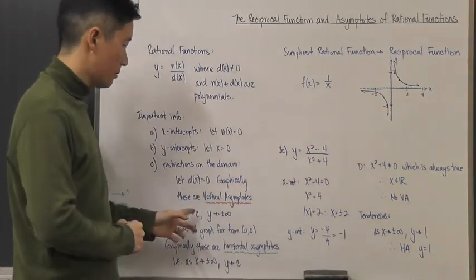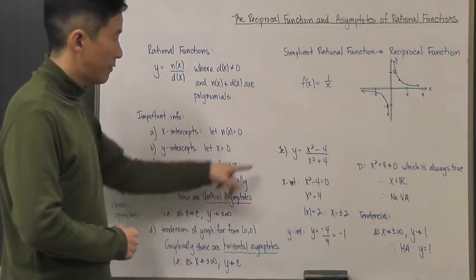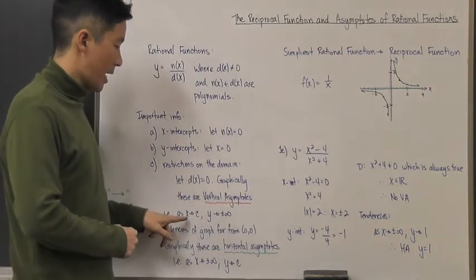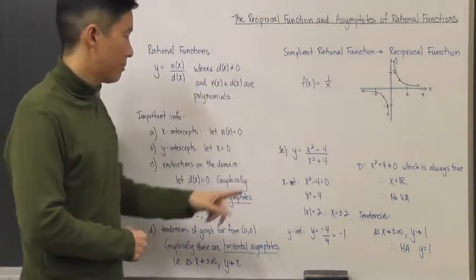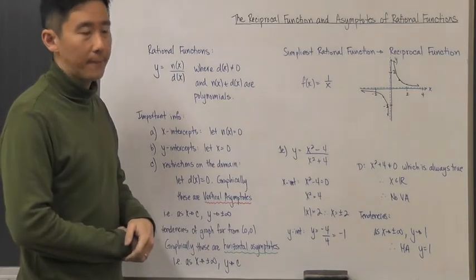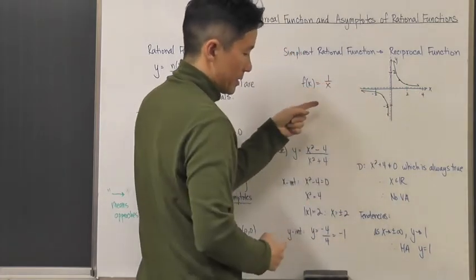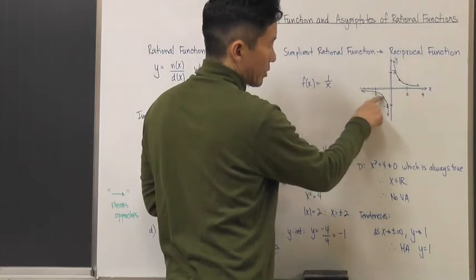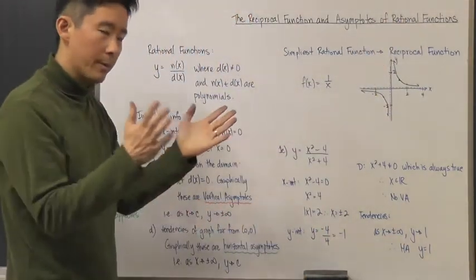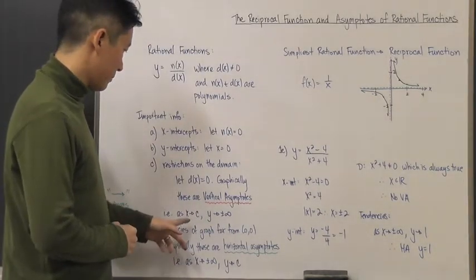To describe the vertical asymptote for the reciprocal function: as x approaches 0, y approaches plus or minus infinity. Plotting values confirms this — if x approaches 0 from the negative side, y goes to negative infinity; from the positive side, y goes to positive infinity. The function never crosses nor touches that value of x.